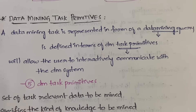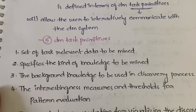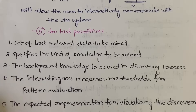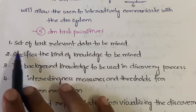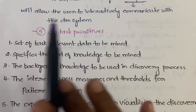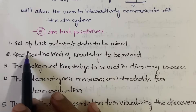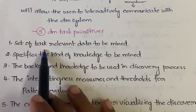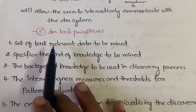We have five data mining task primitives. If the answer is for short marks like four or five marks, you can just write the headings and leave it. If you are getting it for ten marks, you have to explain each of them — I'll tell you about each of them.